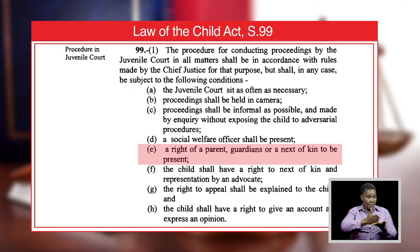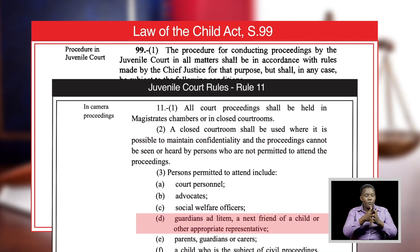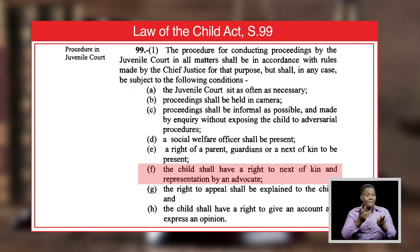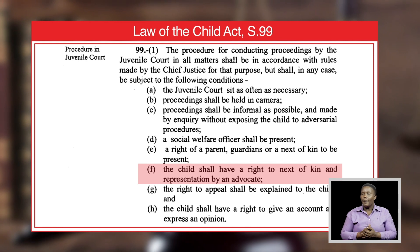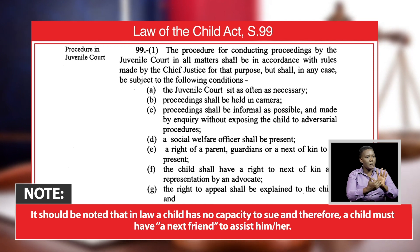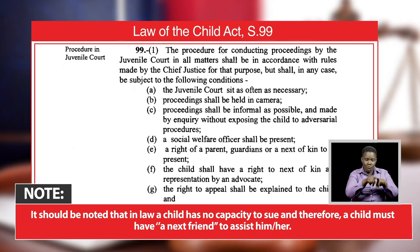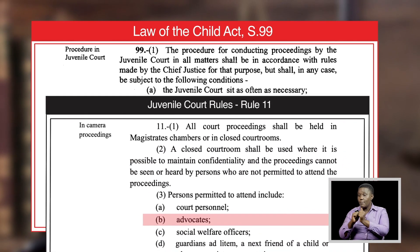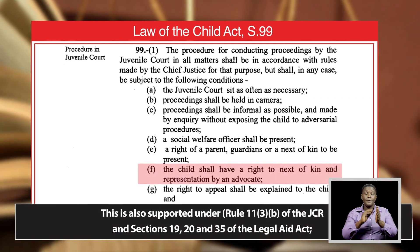A right of a parent, guardian, or next of kin to be present is also pointed out in Rule 11, Subrule 3D and E of the juvenile court rules. Additionally, the child shall have a right to legal representation by an advocate, guardian ad litem, or paralegal. It should be noted that in law, a child has no capacity to sue and therefore must have a next friend to assist him or her, as supported under Rule 11, Subrule 3B of the juvenile court rules, and Sections 19, 20, and 35 of the Legal Aid Act.